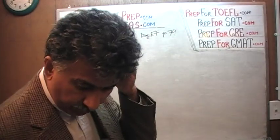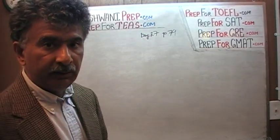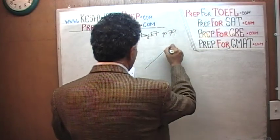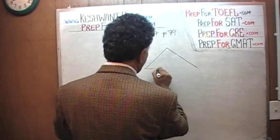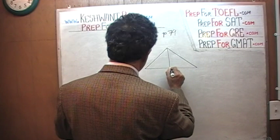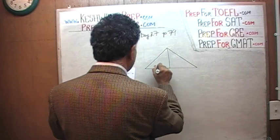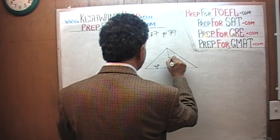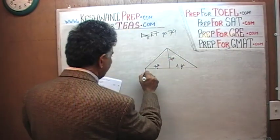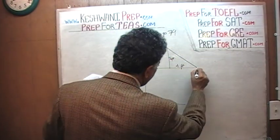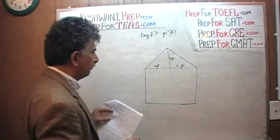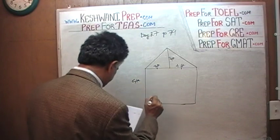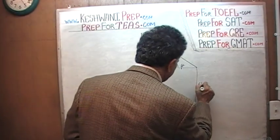Here is the second problem that we are going to do — the one that has to do with a rectangle and a triangle. So let's take a look at it. Something like this is what's been given to us. We are told that this is 4 feet, this is 4 feet, and this is 3 feet. And this bottom part here — the rectangle — we are told that this is 6 feet, this is 8 feet, and this is 6 feet.